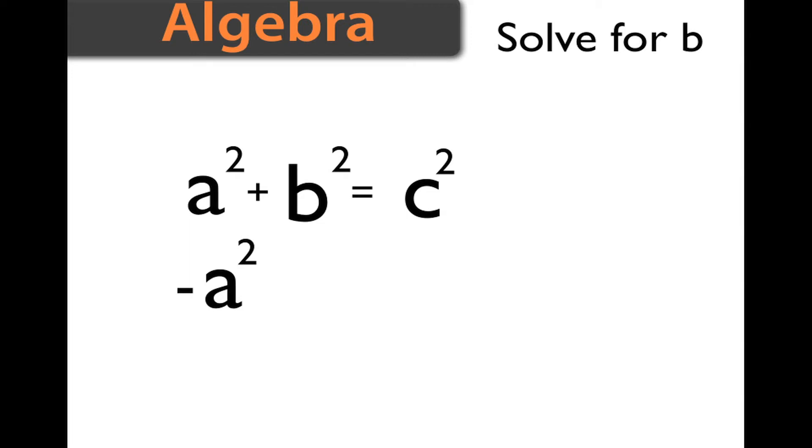That's so we can cancel it off. So we subtract a² from the left side. And if we do that to the left side, we have to do it to the right side. So we subtract a² from there. Now that allows us to cancel off a² minus a² is zero. So we just cancel that off.